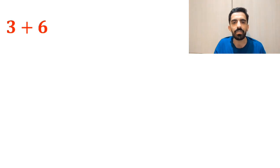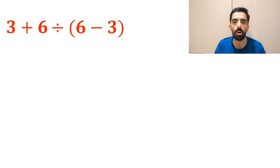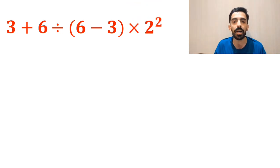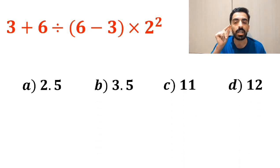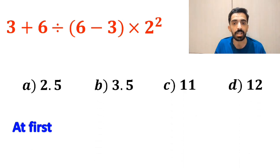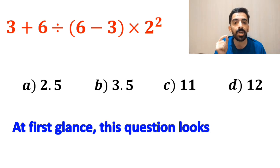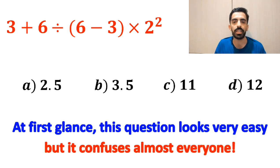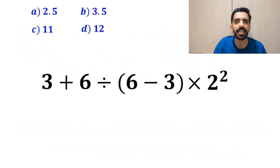What do you think is the value of the expression 3 plus 6 divided by open parenthesis 6 minus 3 close parenthesis, then times 2 to the power of 2? Which option do you think is the correct answer to this question? At first glance, this question looks very easy, but it confuses almost everyone. Let's dive in and break it down step by step together.